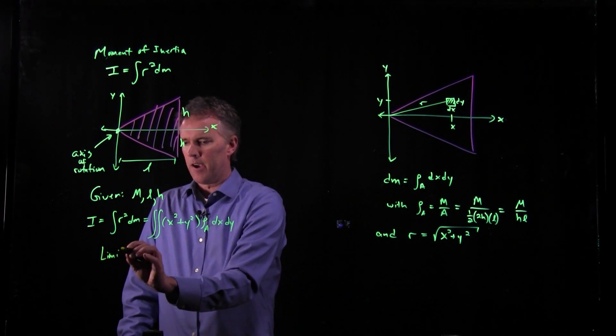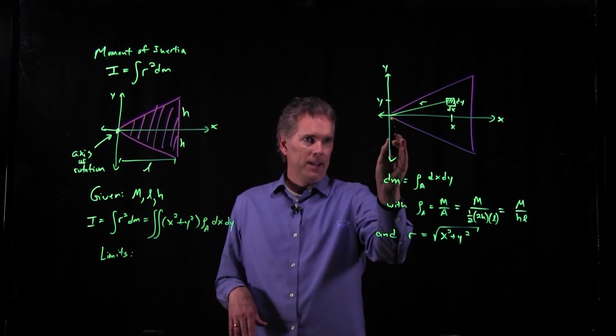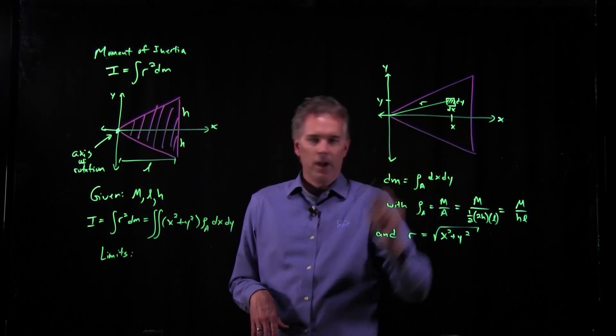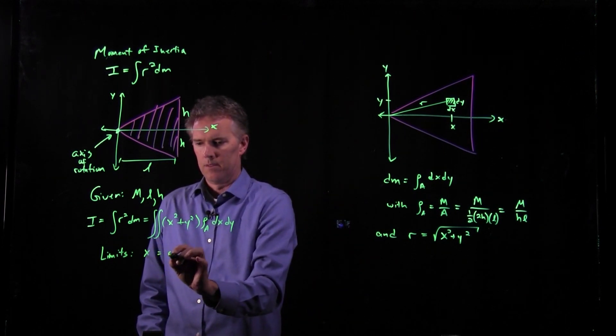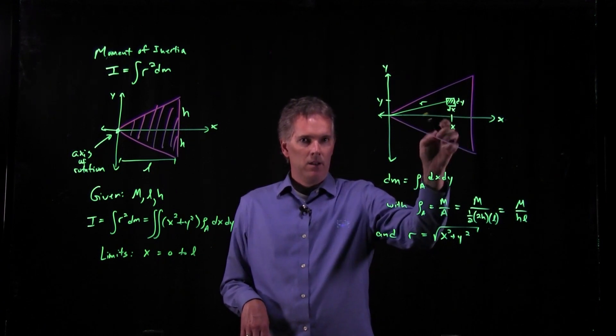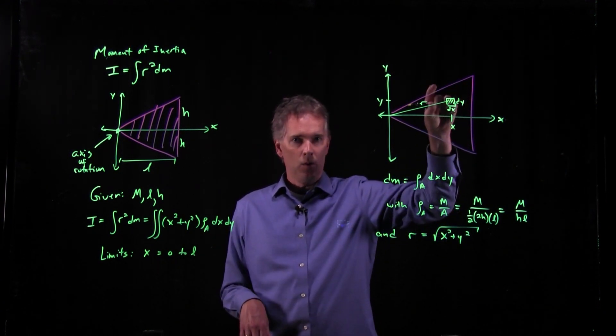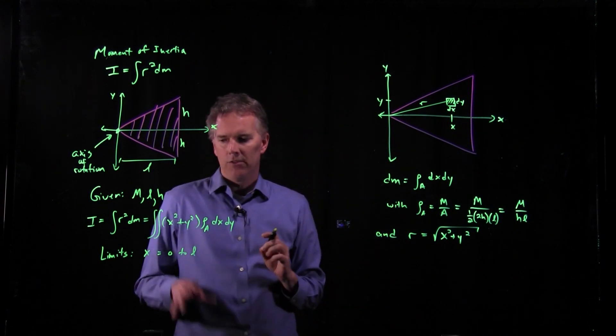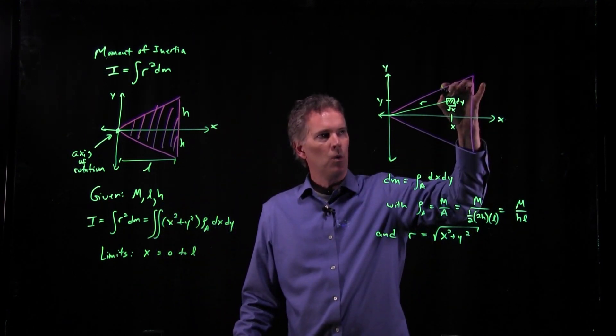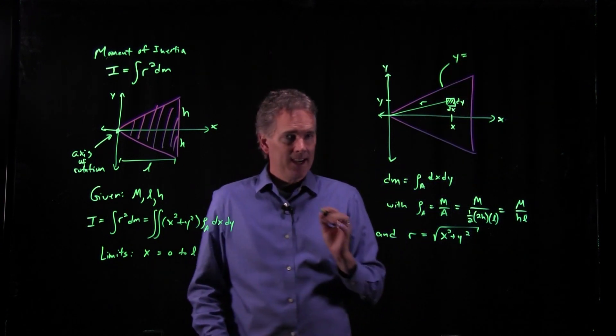It looks a little complicated, but it's not going to be too bad. First off, let's figure out what the limits are on this integral. We're going to have to integrate x all the way from 0 to L. But as we do that, y doesn't go all the way from h to minus h. It only goes part way. And so we have to figure out what the limits are on y. In other words, we have to figure out what this line is.